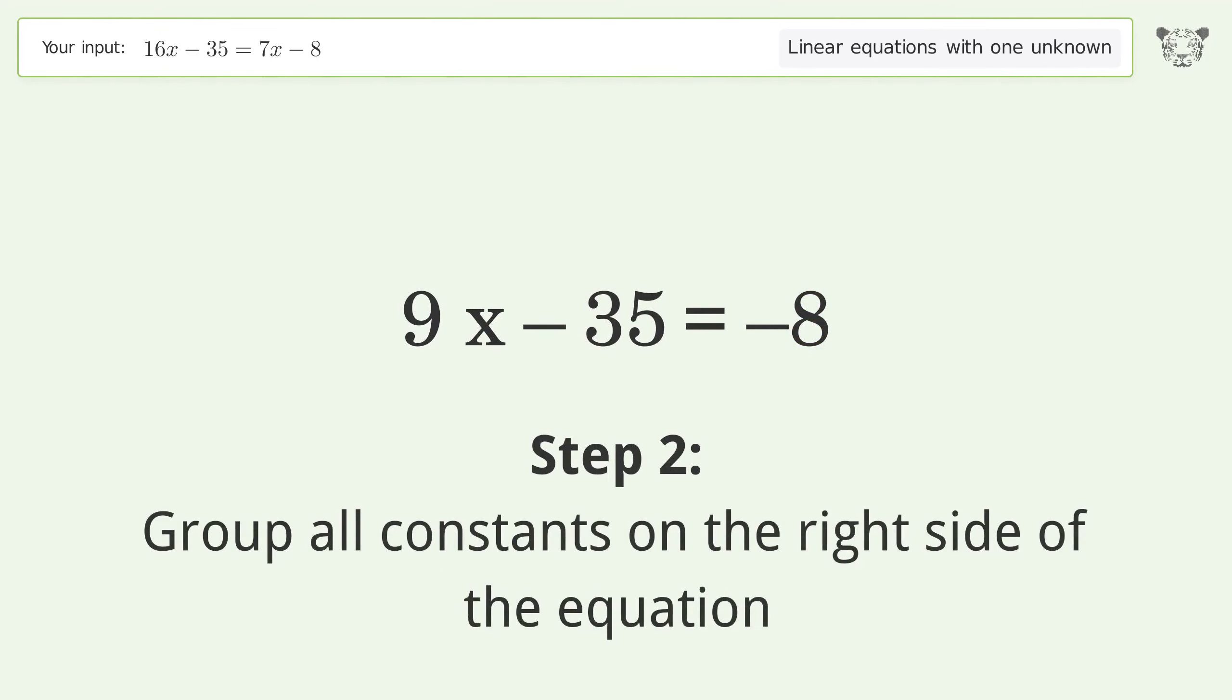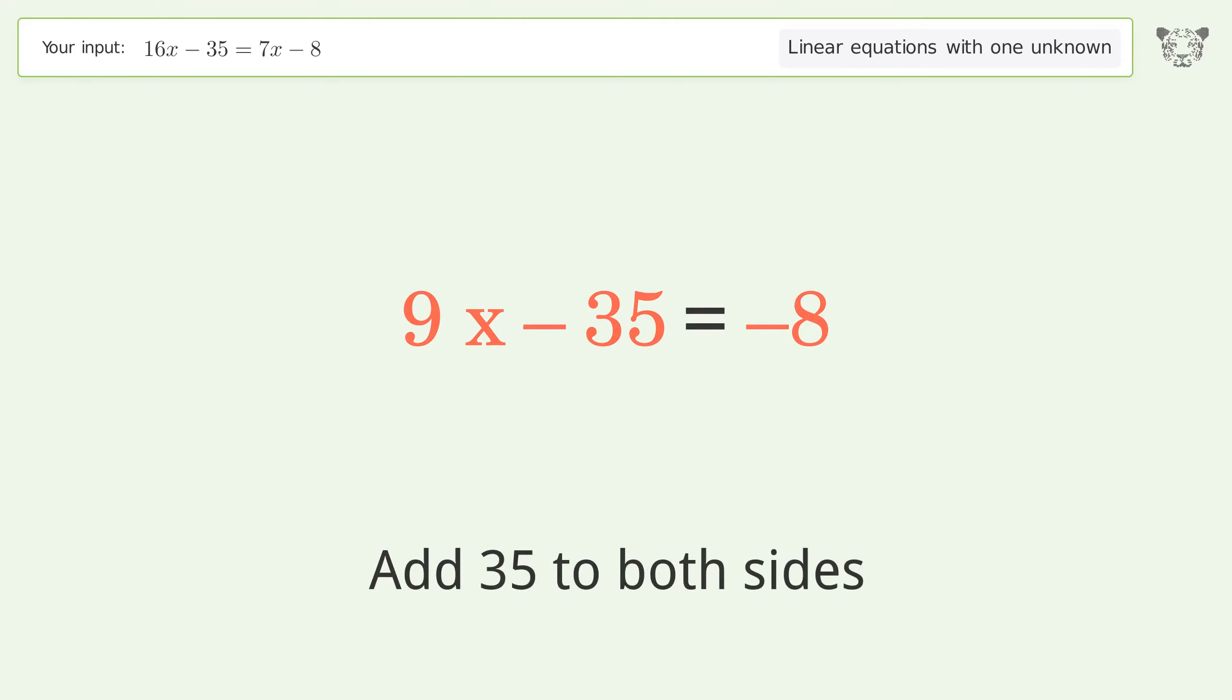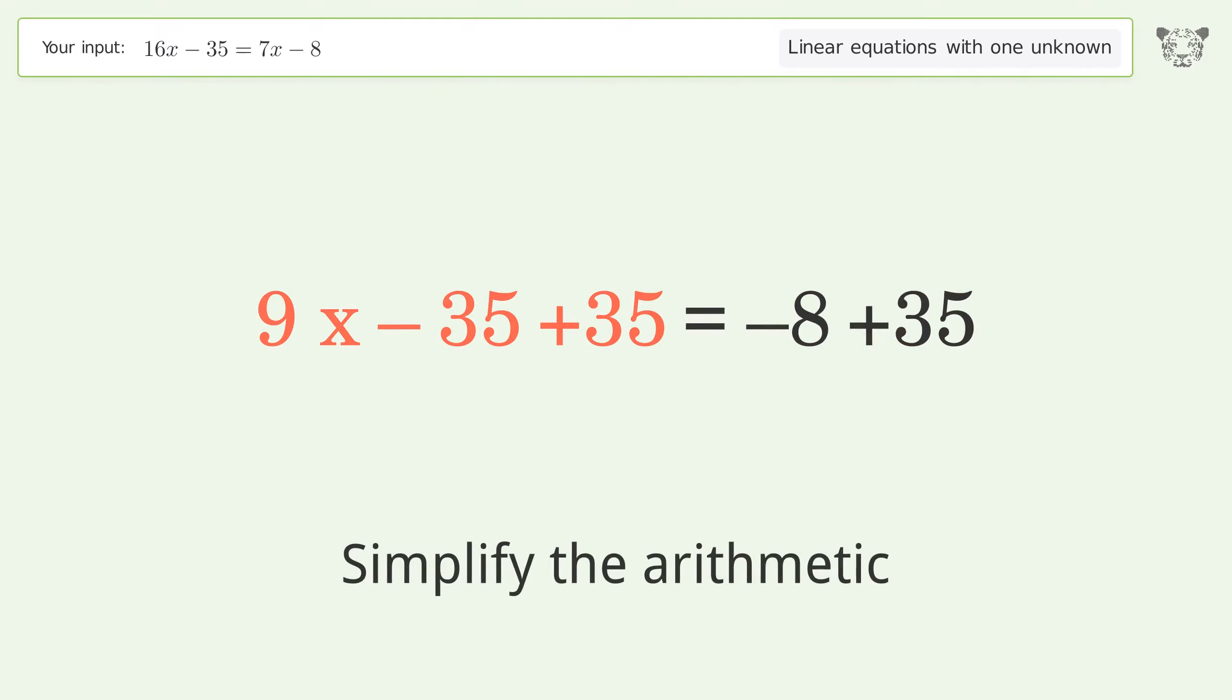Group all constants on the right side of the equation. Add 35 to both sides. Simplify the arithmetic.